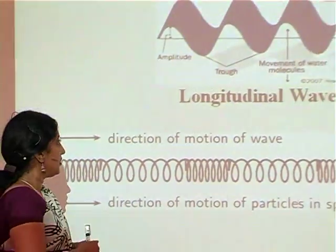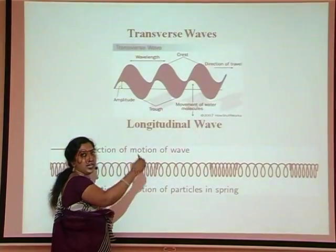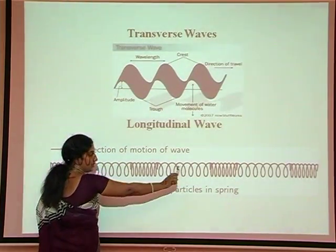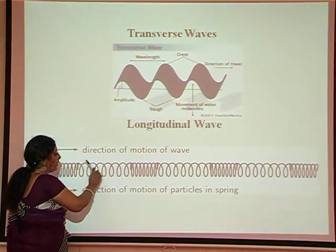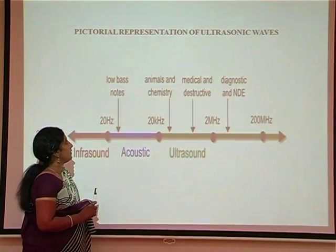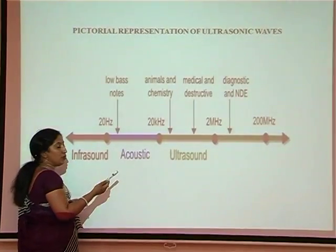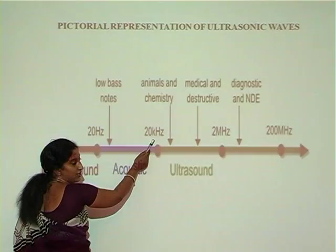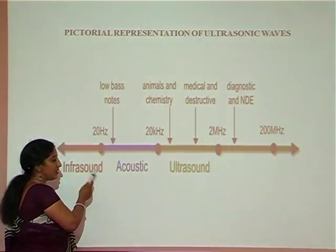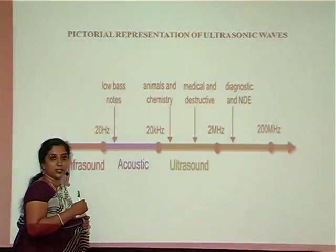This is a pictorial representation: the direction of propagation of the wave and the particles inside the medium vibrating perpendicular to it — that is a transverse wave — and the longitudinal wave where particles vibrate parallel to the wave propagation direction. Sound waves are classified based on frequency. Our human audible range starts from 20 hertz to 20 kilohertz. Sound waves having frequency lesser than 20 hertz are called infrasound — bats emit sound waves in the frequency lesser than 20 hertz, so they are called infrasonics.